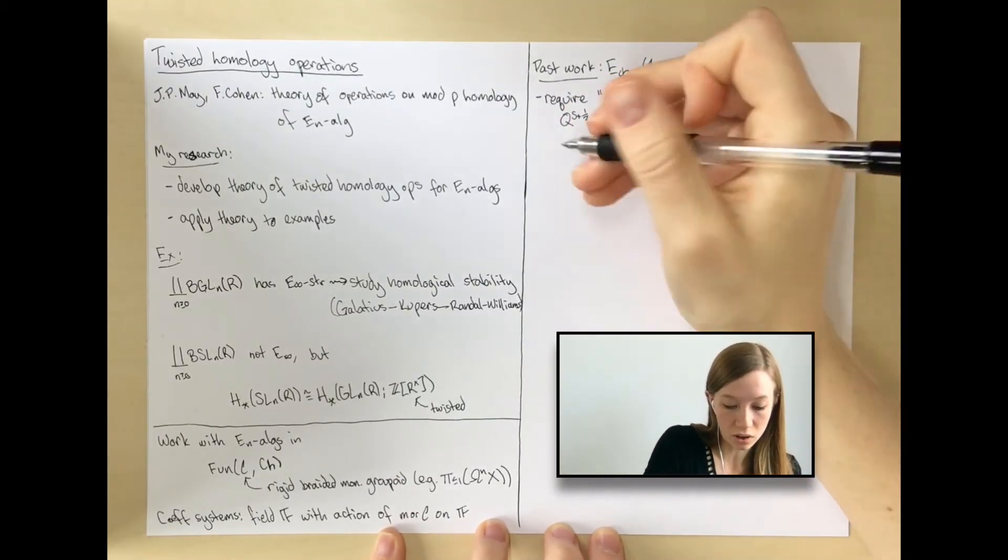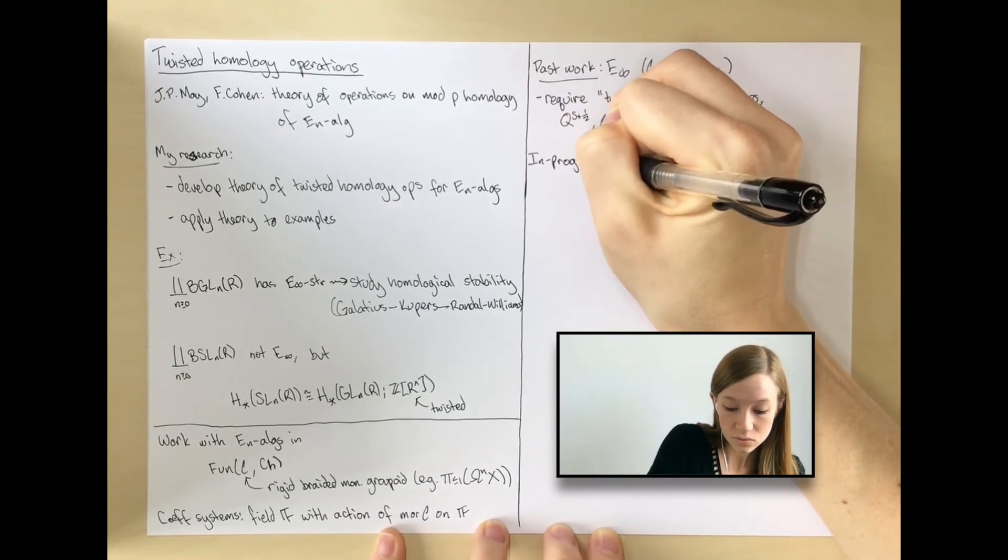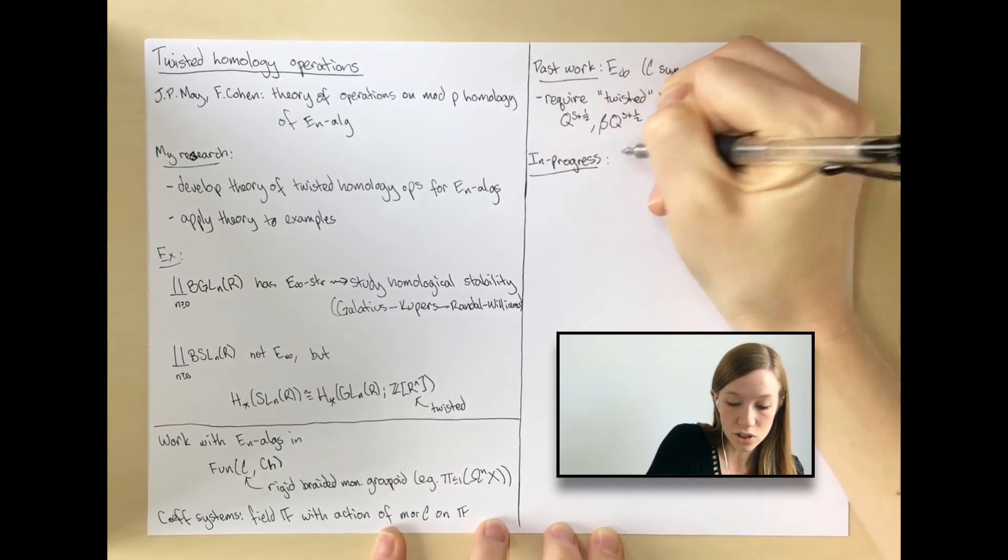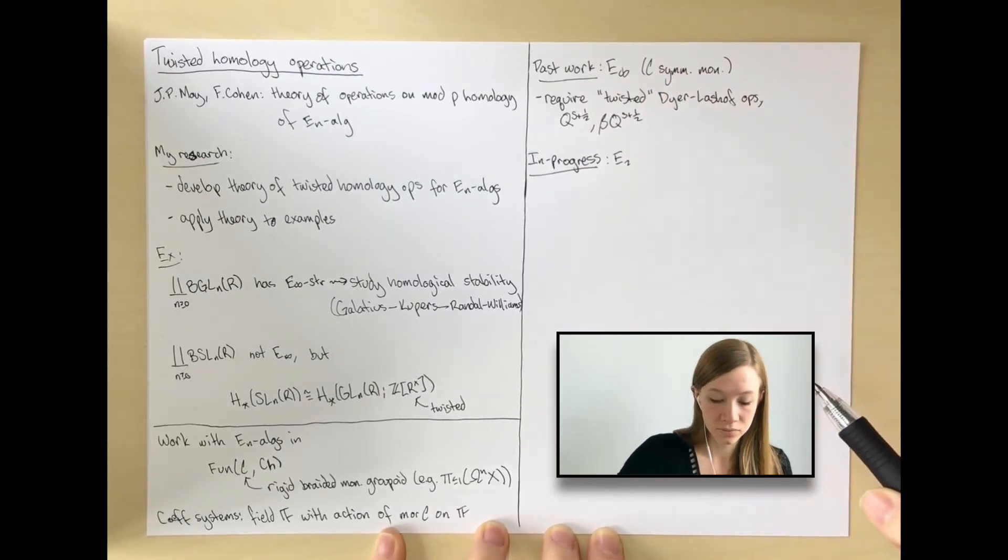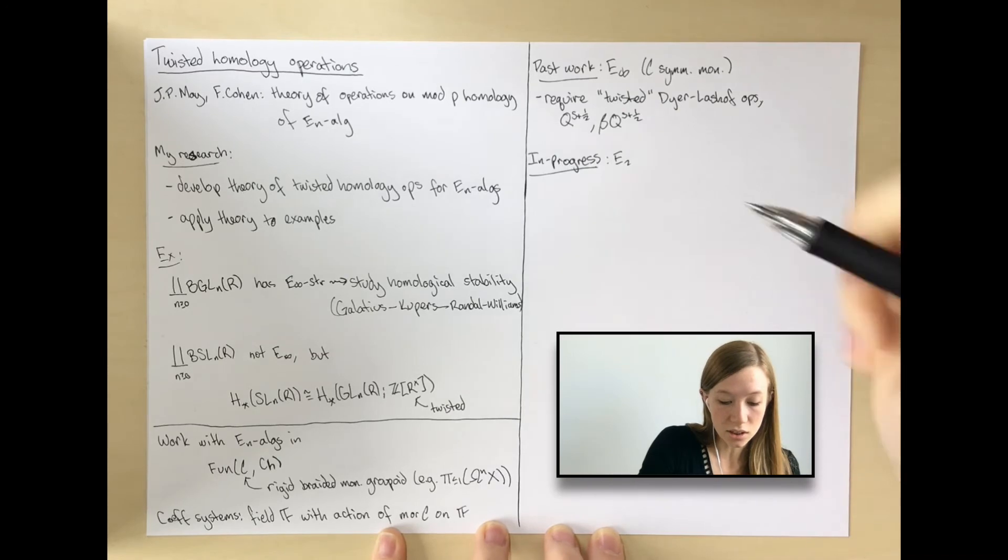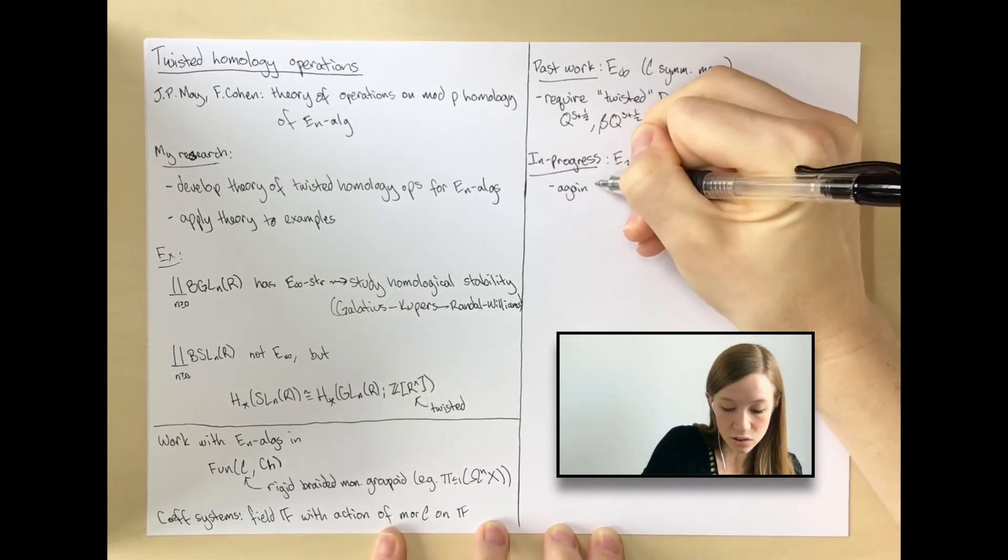Okay, so that's the most different thing in that setting. What I'm currently working on is the case of E_2. Here you can let C be braided monoidal.